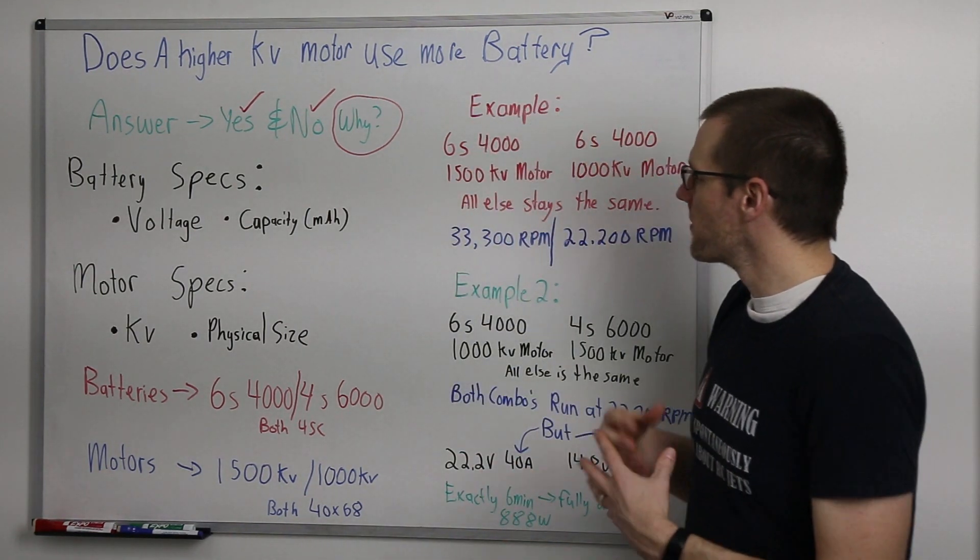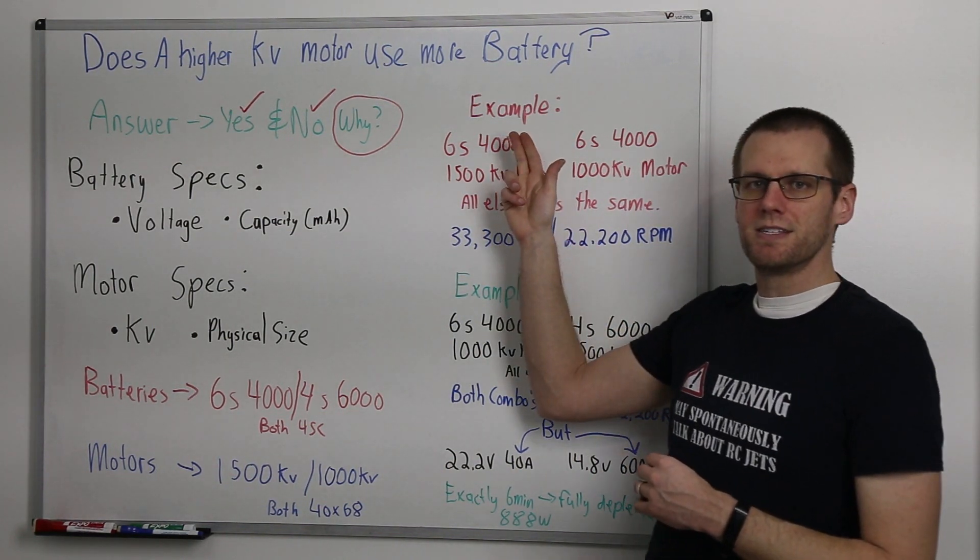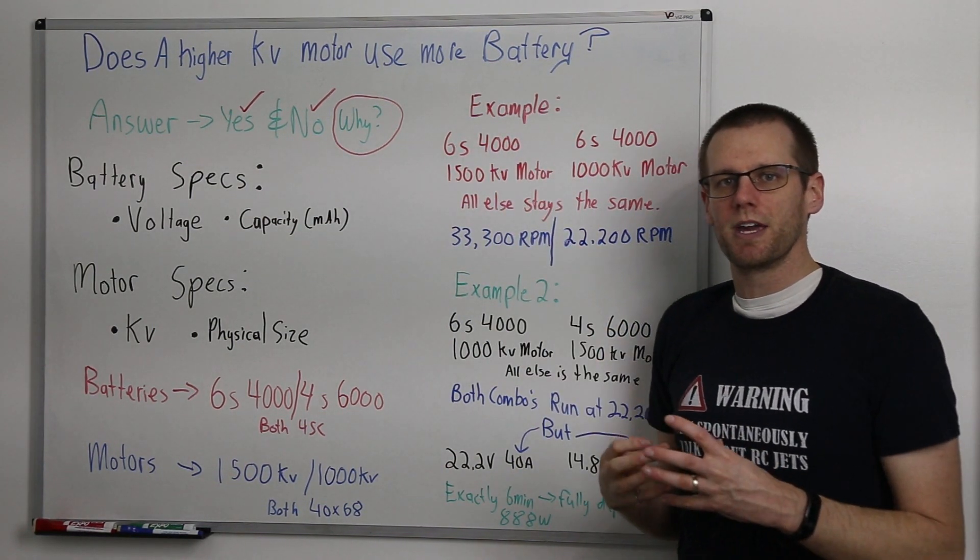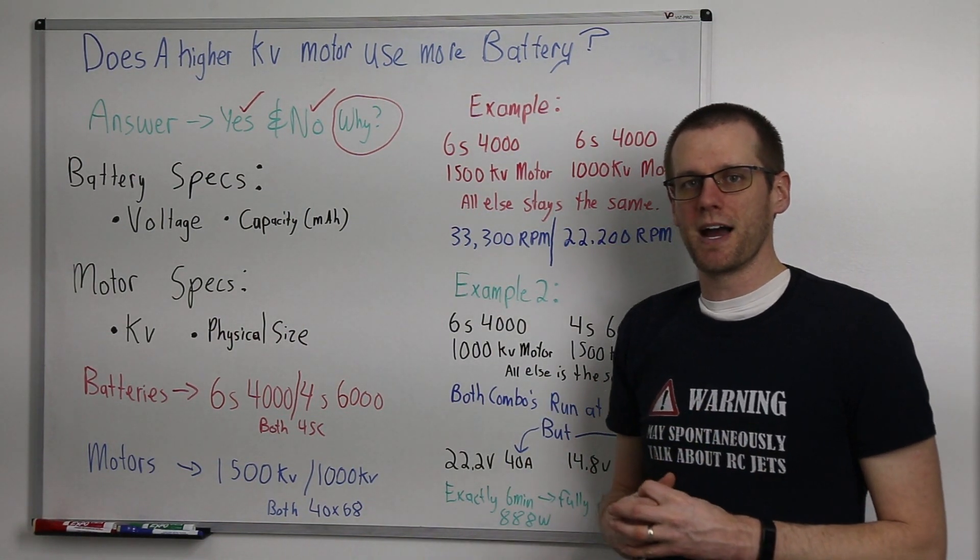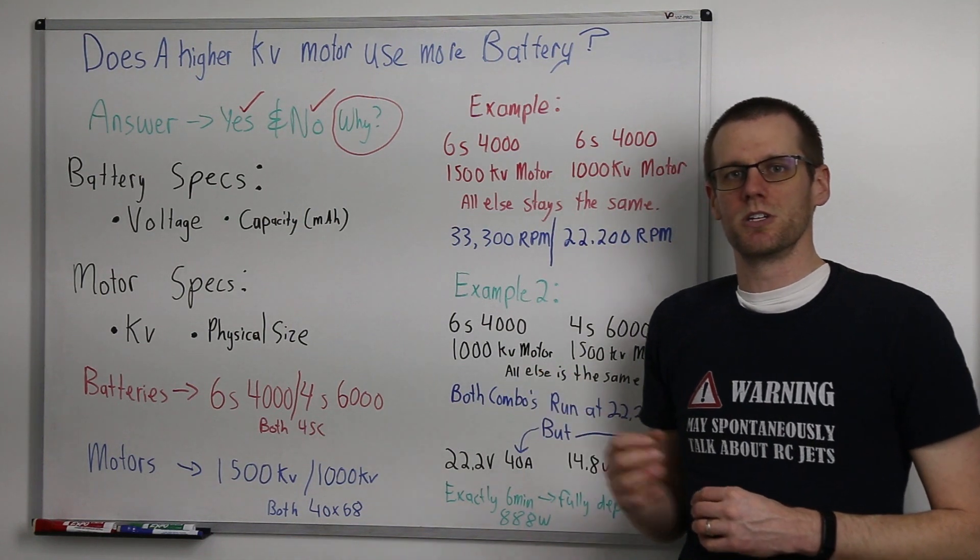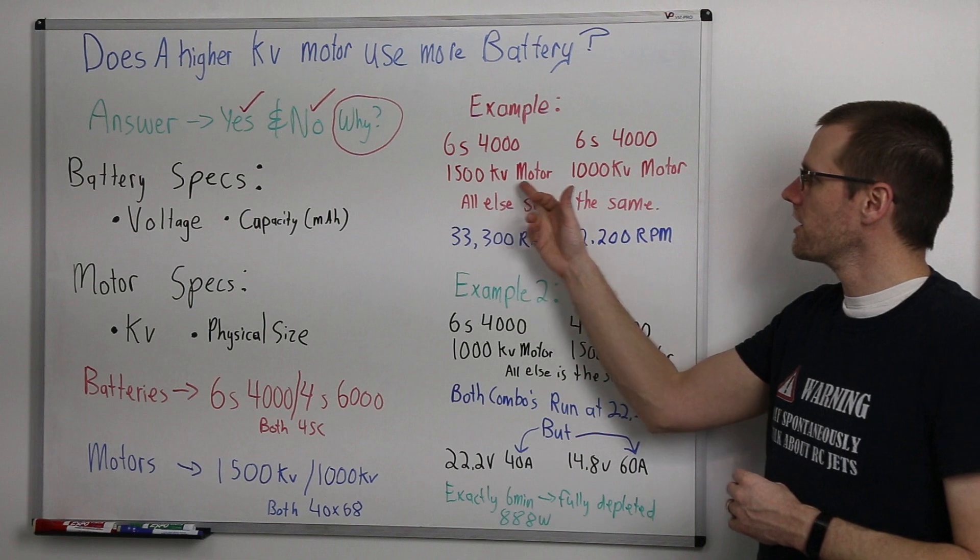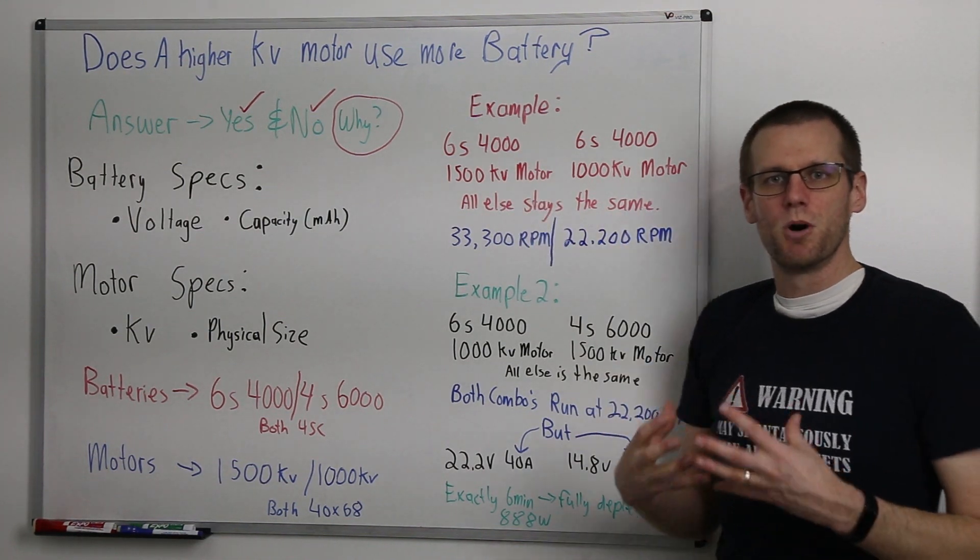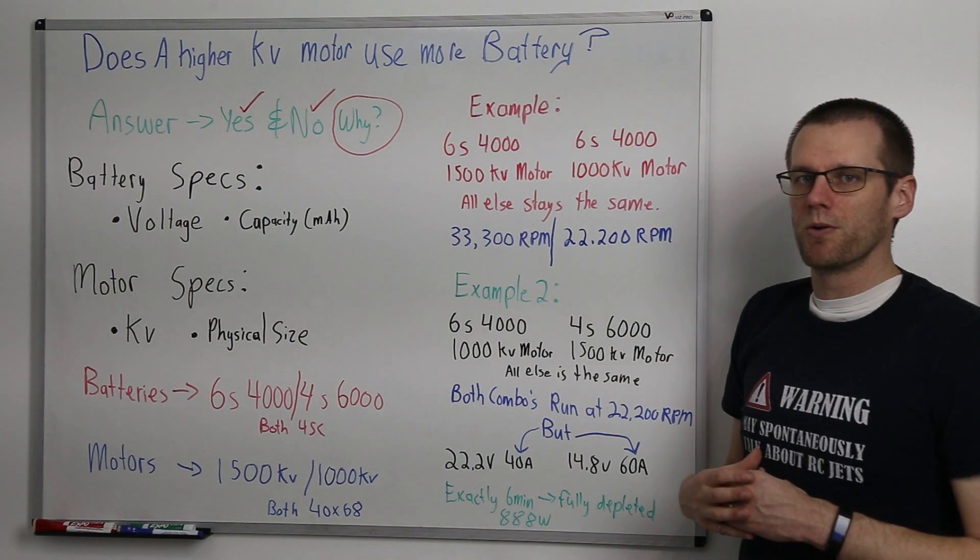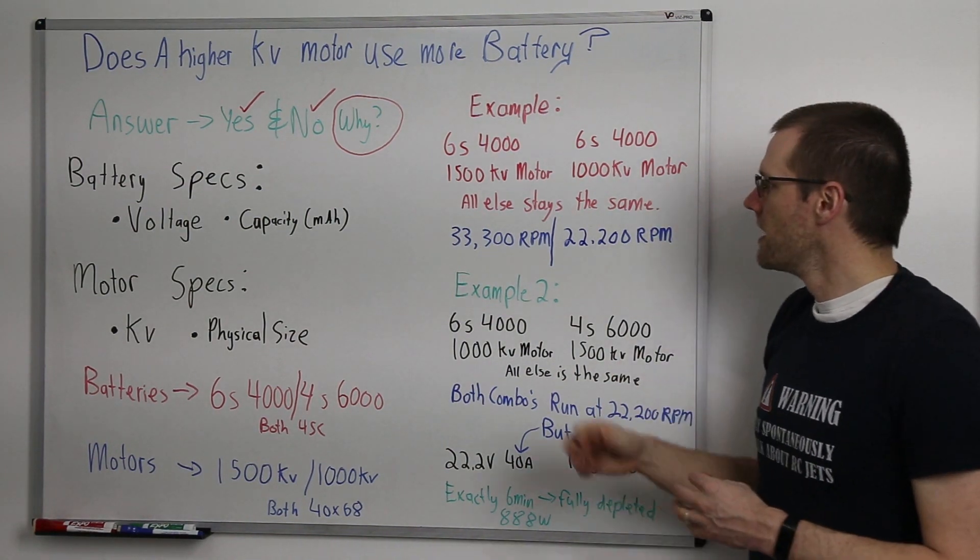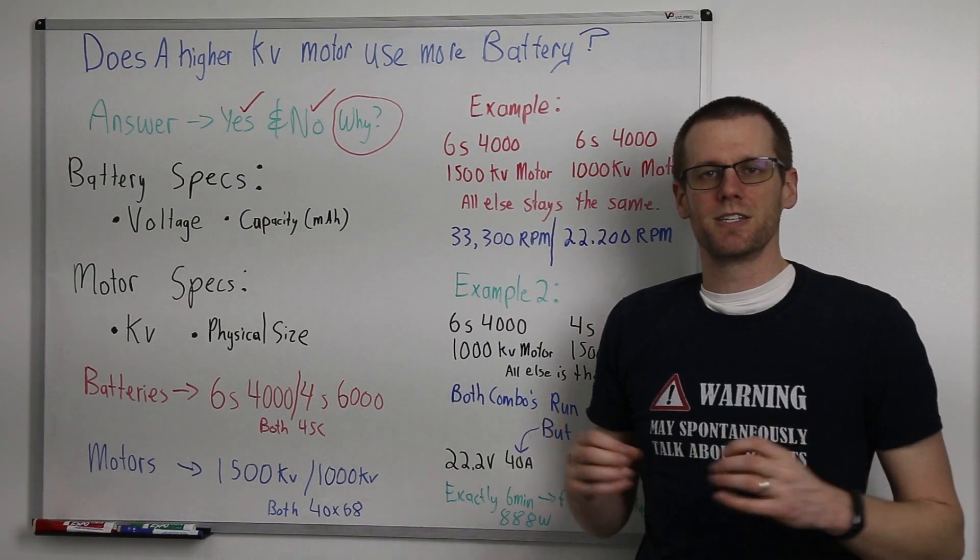Now when we talk about our first example here, we're going to go through one where we have a 6S 4,000 milliamp hour battery pack, as well as a 6S 4,000 milliamp hour battery pack. Obviously the important thing here to note is that both are identical. The only changing thing in our example is going to be the motor that we use. In one case, we're using the 1,500 kV motor, and in the other case, 1,200. All else within this specific radio control vehicle stays the same.